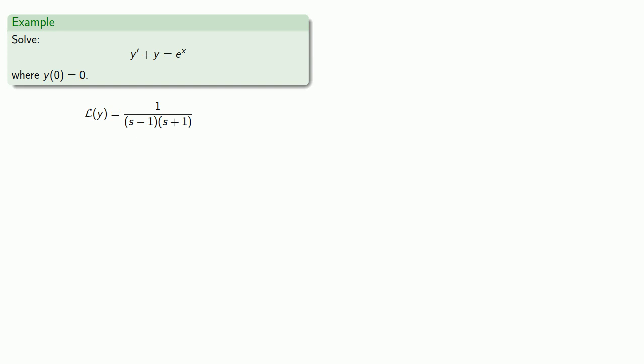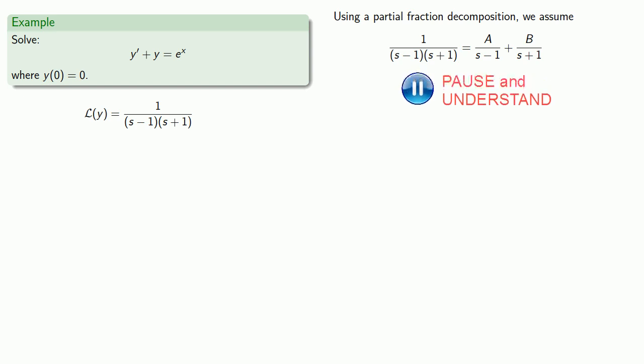And one of those techniques was the technique of integration by partial fractions. So using a partial fraction decomposition, we assume that this fraction can be expressed as a sum of fractions whose denominators are the individual factors. We'll multiply this out and then solve for A and B.